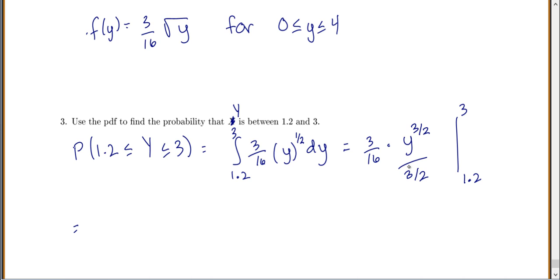Okay, now 3 sixteenths divided by 3 halves should give us 1 eighth, y to the 3 halves, evaluated from y equals 1.2 to 3. So this gives me 1 eighth times 3 to the 3 halves, minus 1 eighth times 1.2 to the 3 halves, which is 0.4852.